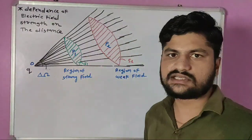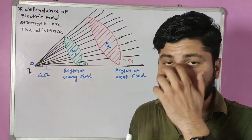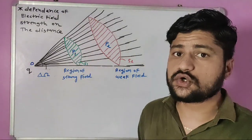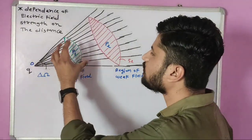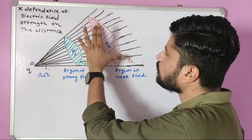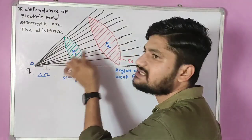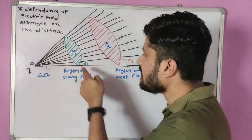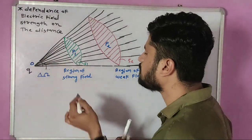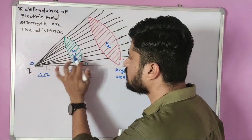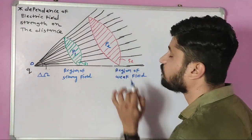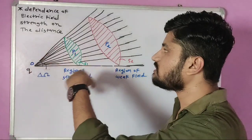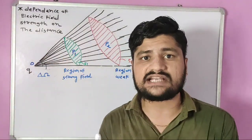Friends, consider these two points. If both points had the same electric field — no? At point P1 the electric field is more, because it is closer — relative closeness. Then at point P2 the electric field is weaker than at P1. This is the region of strong field, and that is the region of weak field. This theory is from NCERT page number 24.